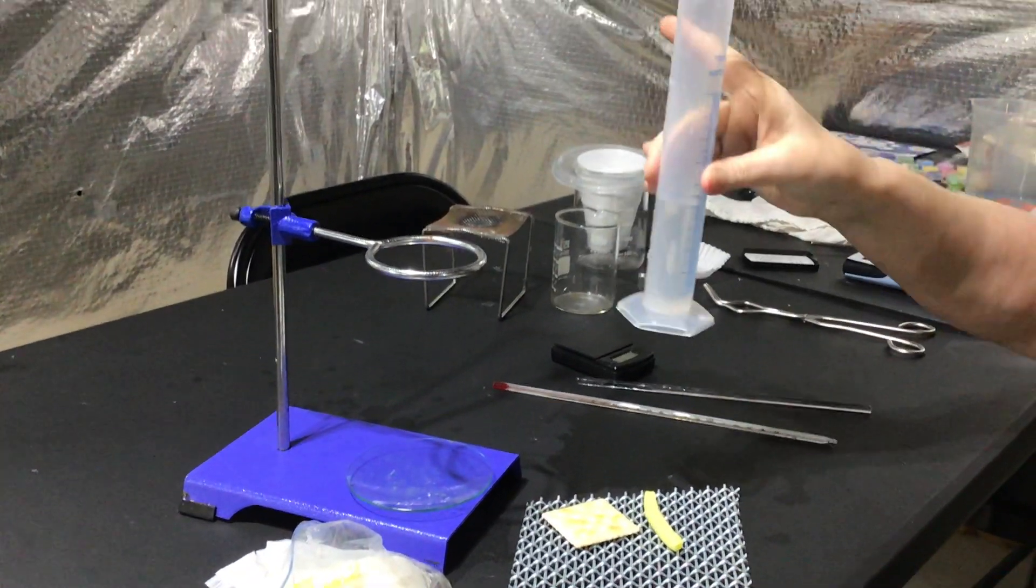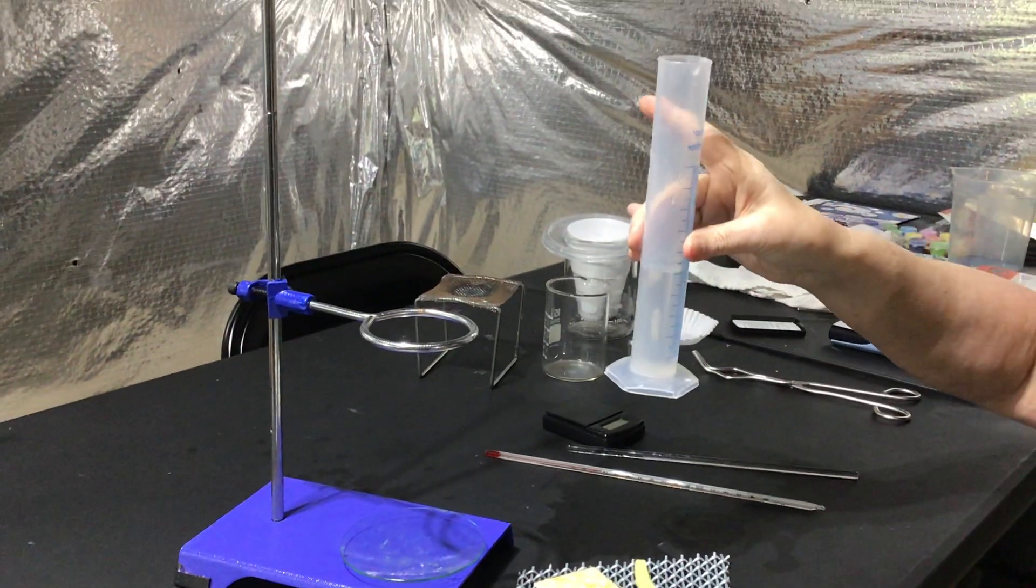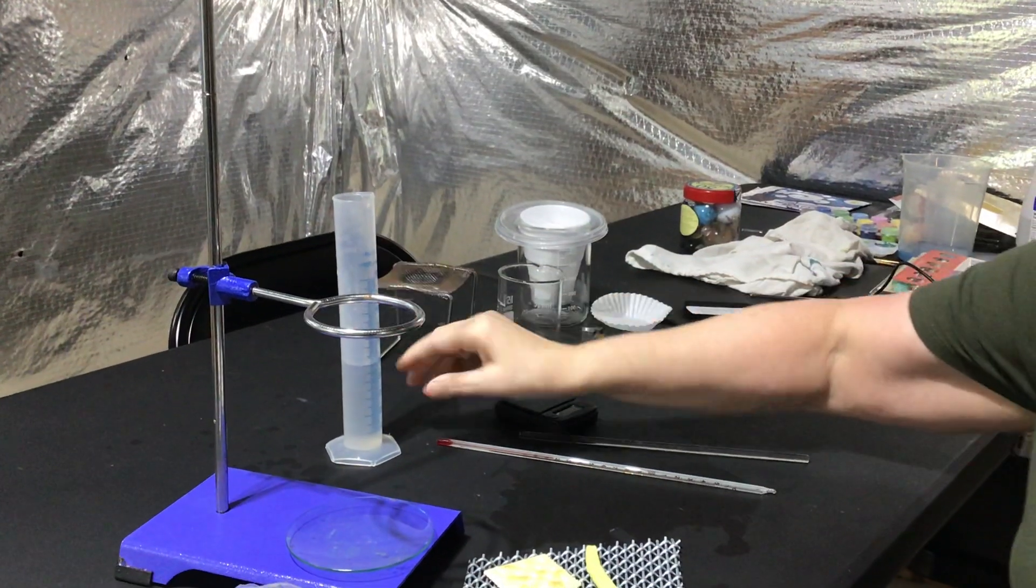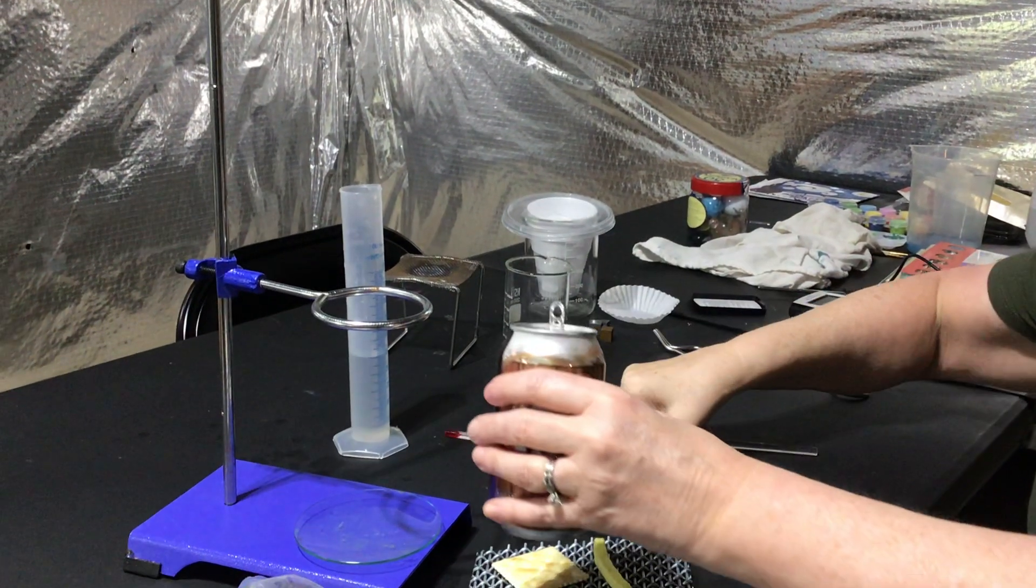Use the same amount. 50 milliliters of water is a good one to use in your calorimeter. Because we need to know how much water you have.